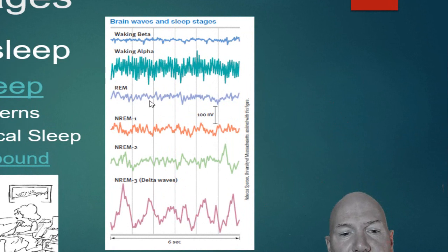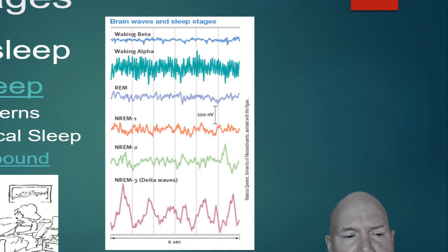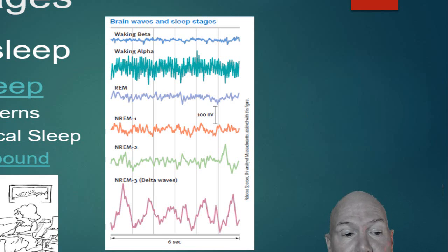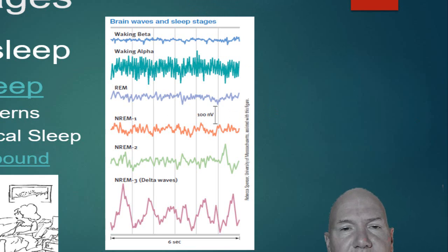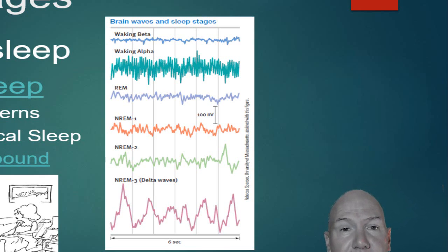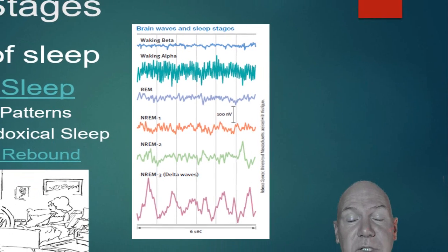REM sleep shows brainwave patterns that look very much like beta waves — your brain is quite active, and we associate dreams with REM sleep. If you wake someone up during REM, which you can observe physically, they will often report a dream. We call this paradoxical sleep. Things are still happening mentally but your body goes into paralysis, aside from slight twitches. Sexual organs are also stimulated during REM — males get erections and females get vaginal wetness. This is why we call it paradoxical sleep: your brain activity is like being awake, yet you're sound asleep.